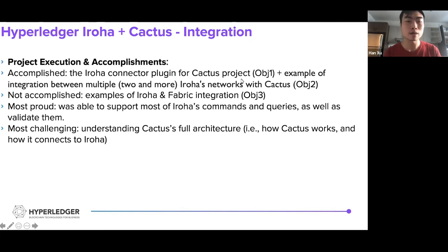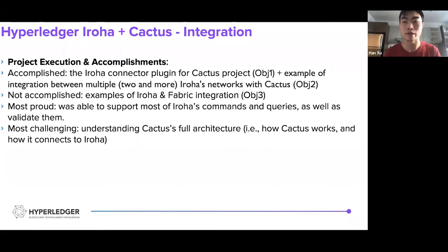Regarding my project execution accomplishments, what I accomplished were objective one and objective two — namely, the connector plugin for Iroha and an example of integration between Iroha networks with Cactus. What I did not accomplish was objective three, the examples of Iroha and Fabric integration, and that was discussed — my mentors and I agreed that we didn't want to do objective three. What I was most proud of was being able to support most of Iroha's commands and queries, as well as using the unit testing framework Iroha Tape to validate them.